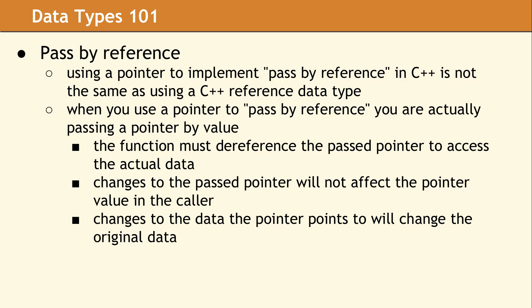However, C++ defines reference with a very specific meaning, and it's important to understand and untangle the connotation of the computer science term of pass by reference from the very specific definition that C++ places on the reference data type. Because in C, when you would use a pointer to pass by reference, you're actually passing a pointer by value, and that has noticeable side effects. The called function must dereference the passed pointer to access the actual data, and changing the pointer that was passed will not affect the pointer value in the caller because it was passed by value.